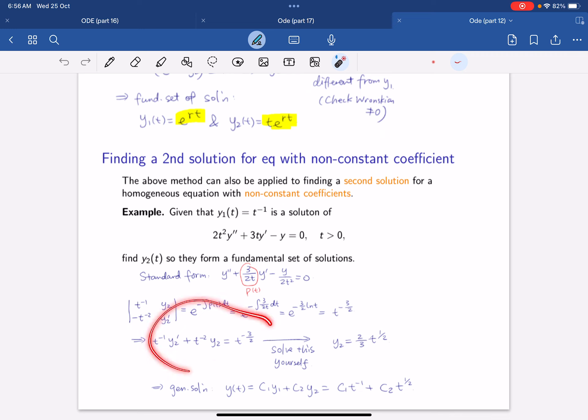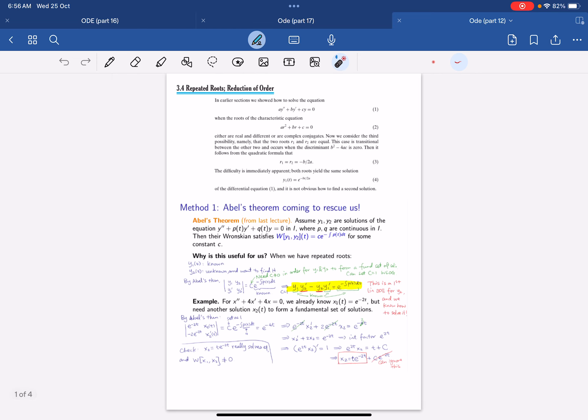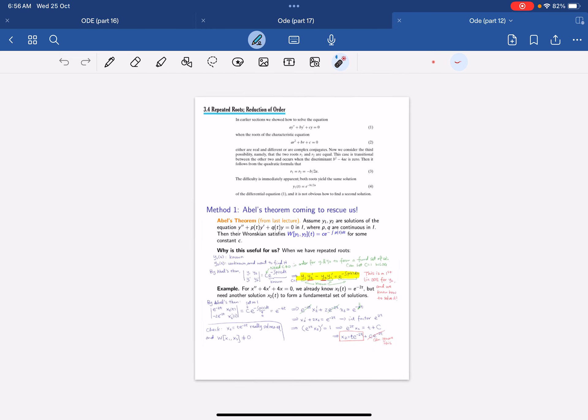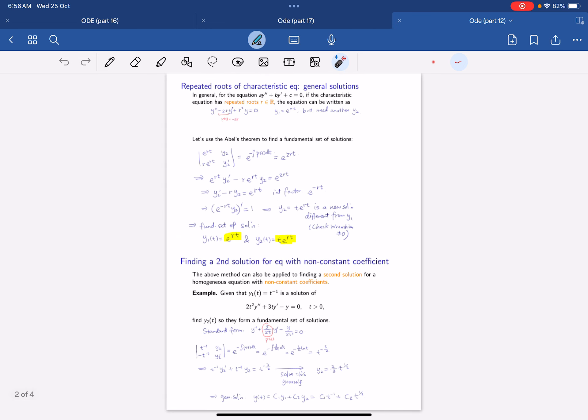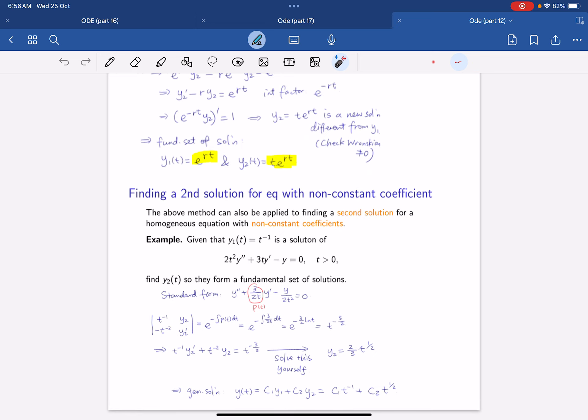In that case, we now can solve this first order ODE to get that y2 equals to 2/3 e^(t/2). From that, our general solution is c1 e^(-t) + c2 e^(t/2). You can see how we use the method of Abel's theorem to help us solve for this repeated roots scenario. With that technique, now we are able to apply to other types of equations such as having non-constant coefficients.